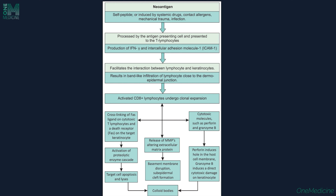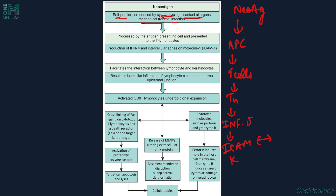In the etiopathogenesis of Lichen Planus, a neoantigen in the epidermis — which can be a self-peptide, induced by a systemic drug, contact allergen, mechanical trauma, or infection — is processed by antigen-presenting cells and presented to T-cells. The T-helper cells are activated and produce interferon gamma. Interferon gamma increases the expression of ICAM on keratinocytes. ICAM is a ligand for beta-2-integrin present on T-cells, establishing a link between keratinocytes and T-cells, causing a band-like inflammatory infiltrate at the dermo-epidermal junction.